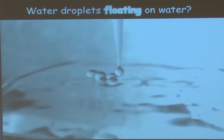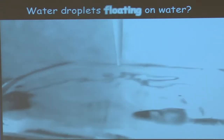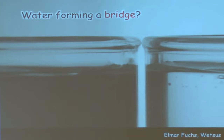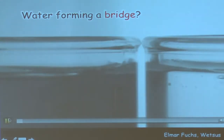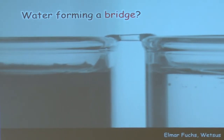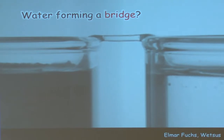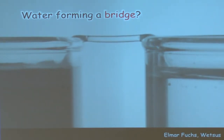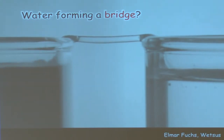Here's another example: you drop water on water from the right distance, and the droplet goes through a series of reductions instead of coalescing instantly. Everybody thinks water meeting water will coalesce immediately, but that's not the case. And here's another from Elmar Fuchs: you take two beakers lip to lip, fill them with water, insert two electrodes, apply high voltage, and you get a bridge between them.